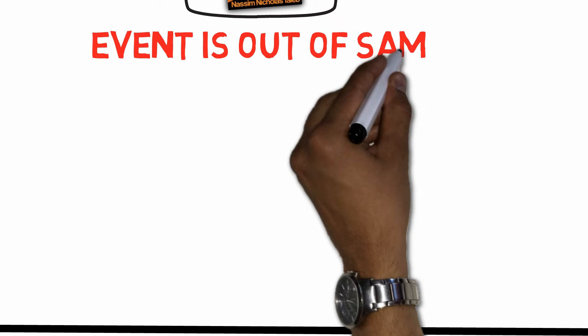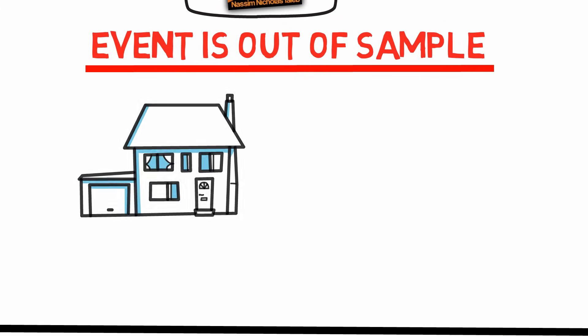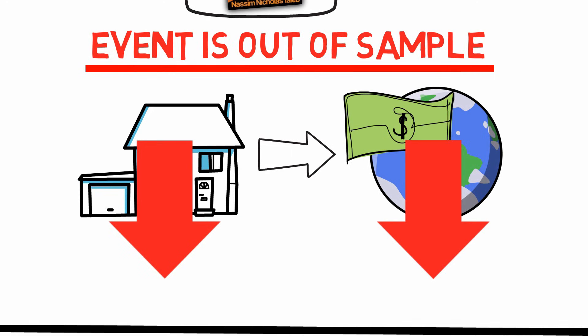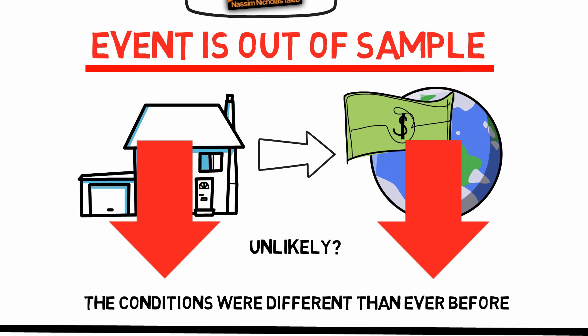Event is out of sample. To think that housing prices could have such a major effect on the economy seemed quite unlikely looking at historical data. The problem was just that in 2006, historical data didn't help much in making a prediction, as the conditions were vastly different than ever before. Never had the economy been so highly leveraged, and never had so many side bets been made on housing prices.